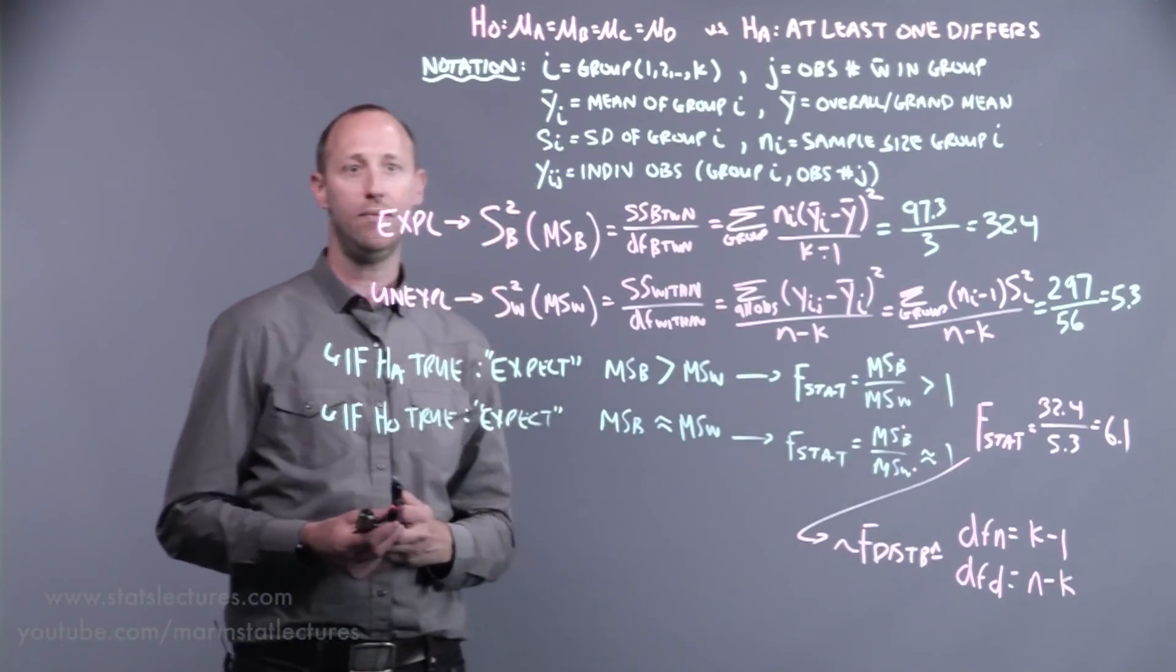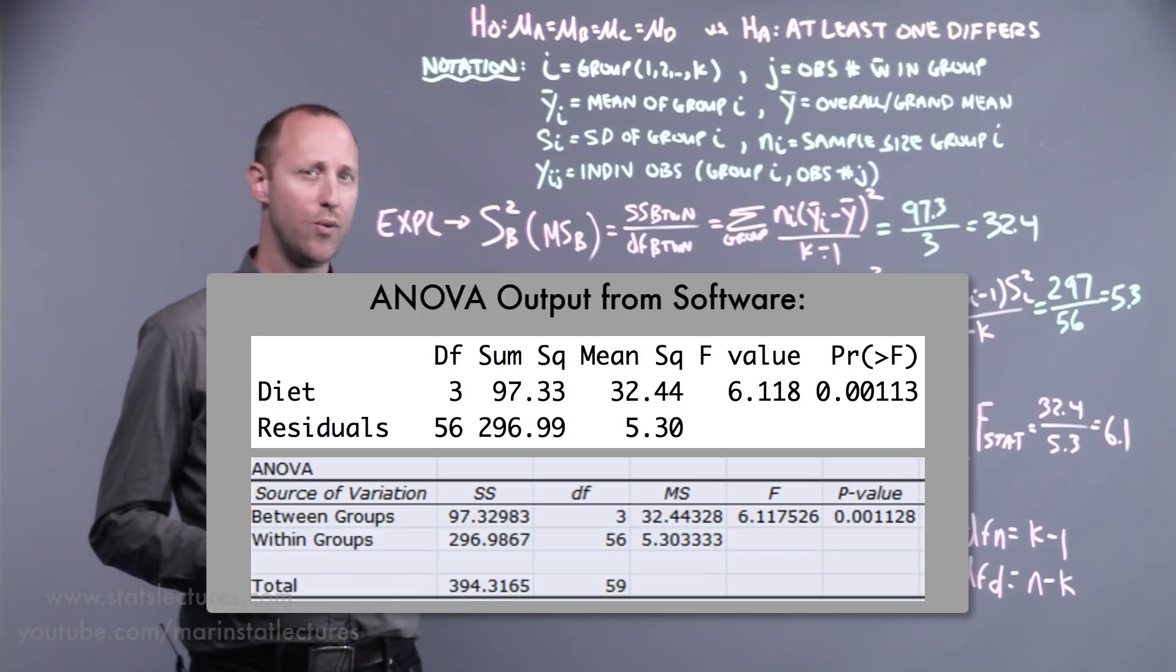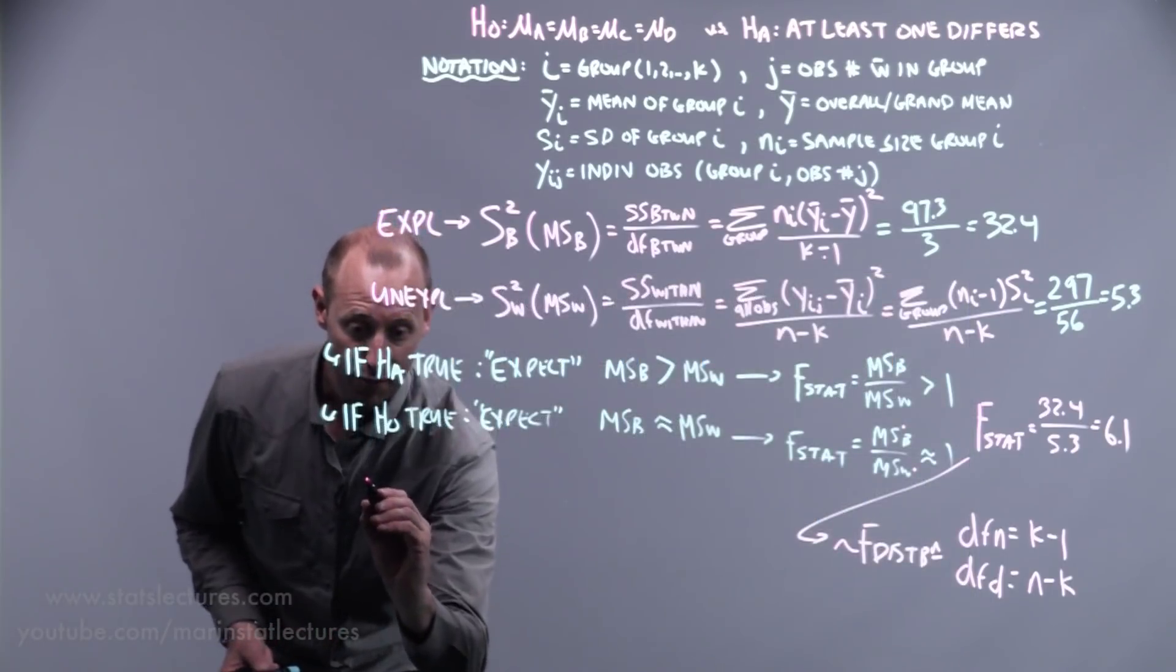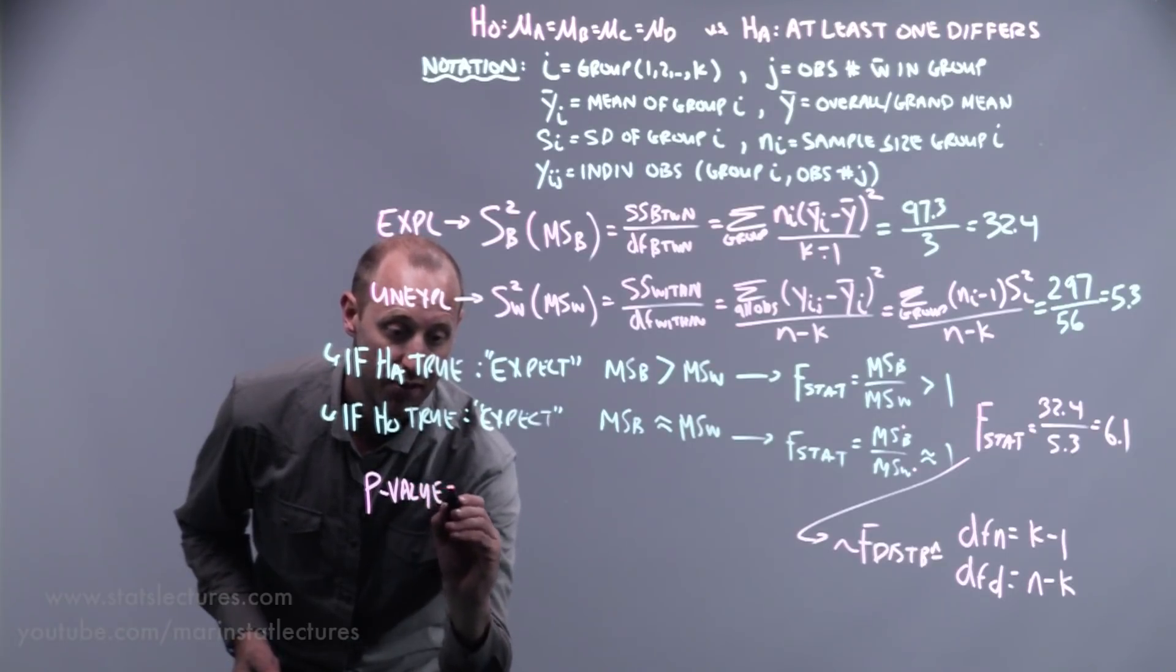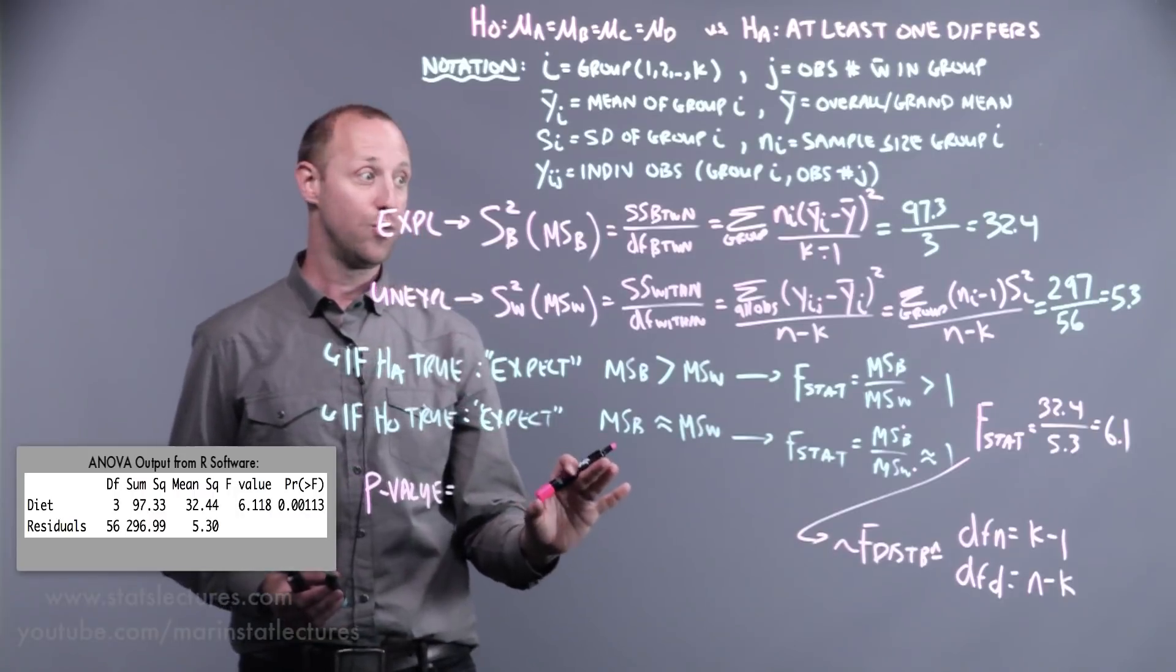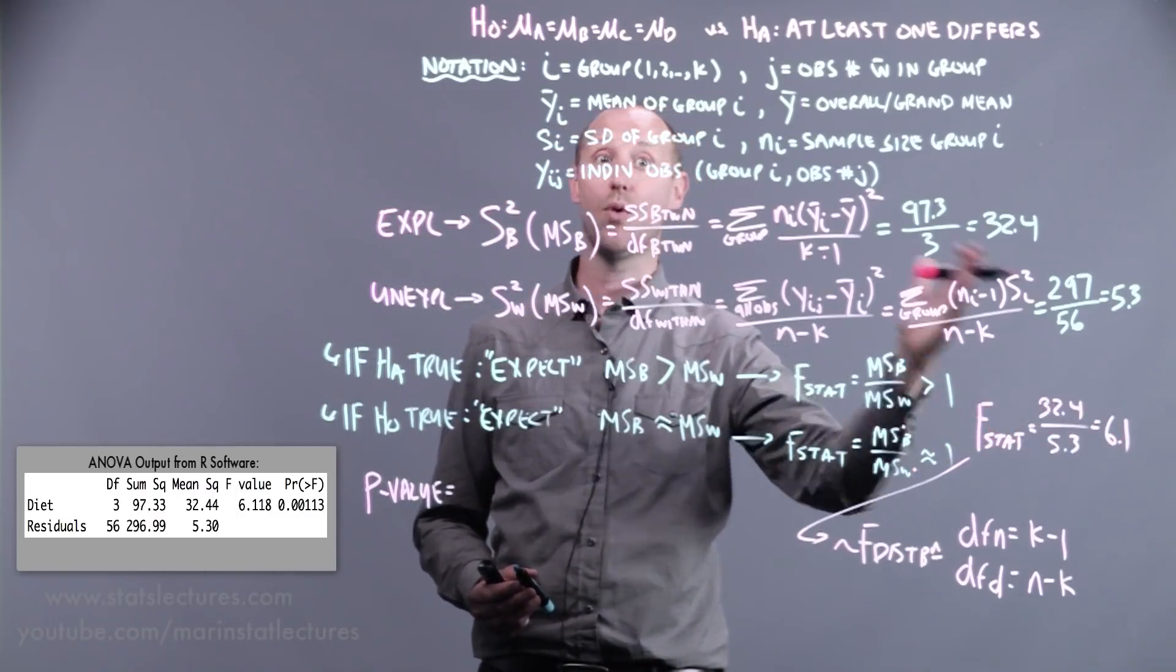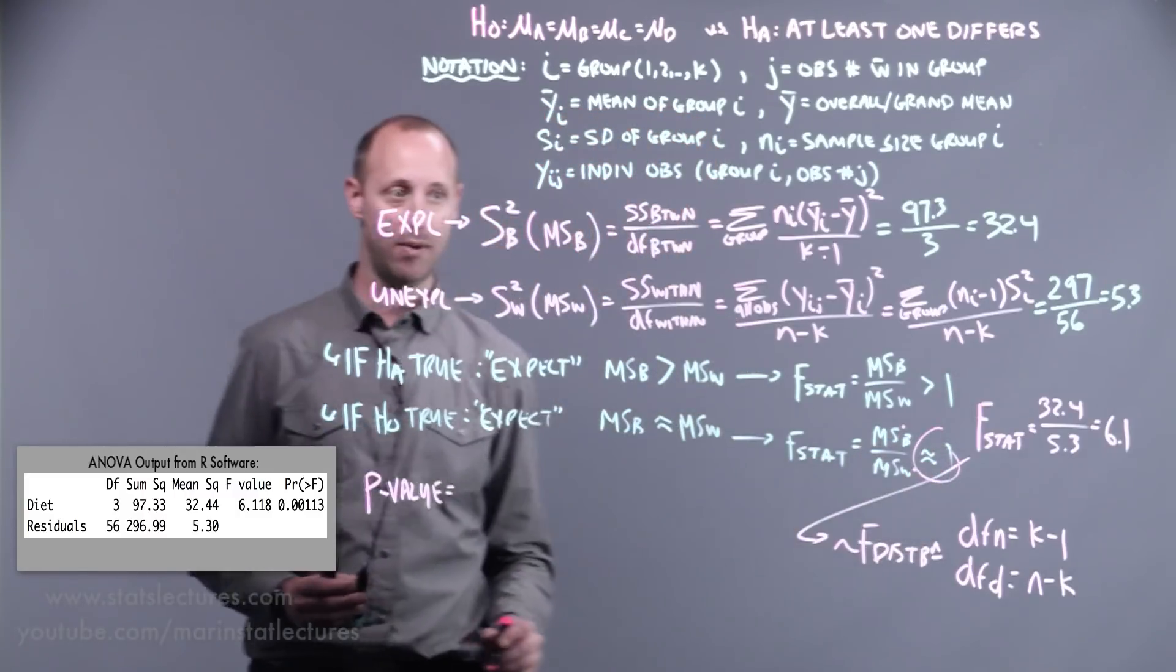A piece of software can do all these calculations for you. We don't want to focus on an F table and looking up an exact P value from that table. So let's just jump to the interpretation. If we were to work this out, looking at a table or using a piece of software, the P value is going to tell us, like it always does, what's the probability of our observed test statistic or one even more extreme if the null is true and we'd expect it to be 1.